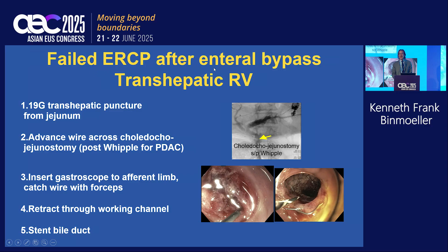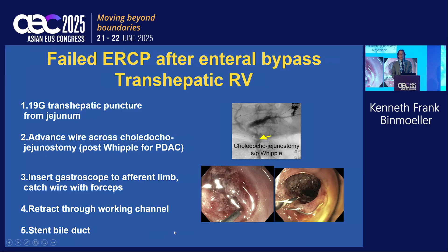After a failed ERCP following an enteral bypass, you can also perform a transhepatic rendezvous. Same algorithm: 19-gauge transhepatic puncture from the jejunum in a post-Whipple patient, advance the wire across the choledochojejunostomy, insert the gastroscope to the afferent limb, and catch the wire with forceps. Sometimes you'll need a pediatric colonoscope. Retract through the working channel, then place your bile duct stent or pass other instruments. This has significantly shortened the time and effort compared to enteroscopy alone.